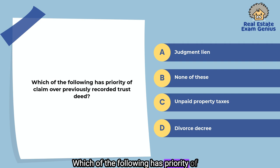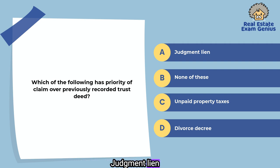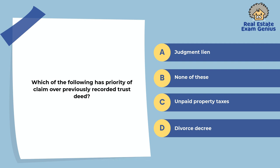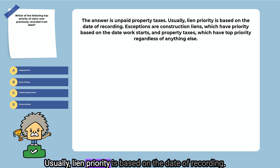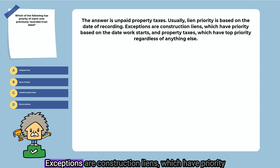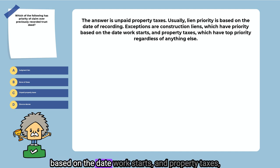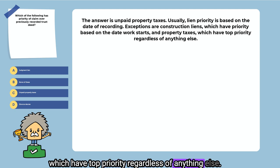Which of the following has priority of claim over a previously recorded trust deed? Judgment lien, none of these, unpaid property taxes, or divorce decree. The answer is unpaid property taxes. Usually, lien priority is based on the date of recording. Exceptions are construction liens, which have priority based on the date work starts, and property taxes, which have top priority regardless of anything else.